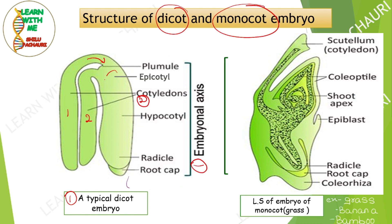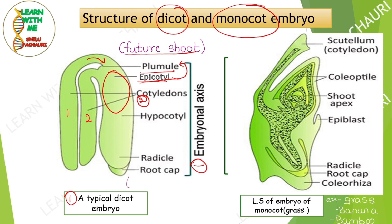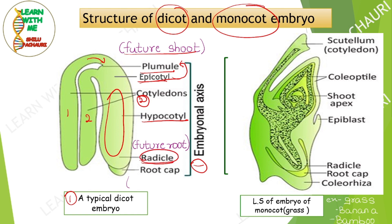Within the cotyledons, the epicotyl is present. The epicotyl develops into plumules, and these plumules develop into shoots. The cylindrical part below the cotyledons is called the hypocotyl, where the radicles are developed. These radicles will become the roots of the future plant, germinating from the seed. At the root tips, root caps are present to protect them.